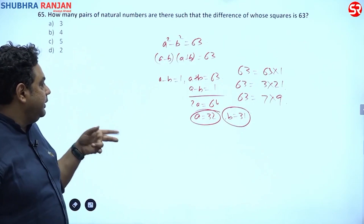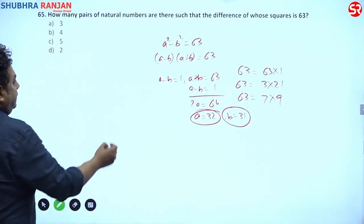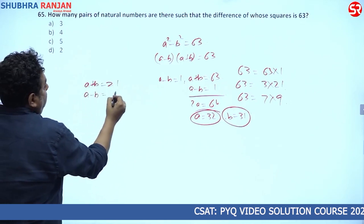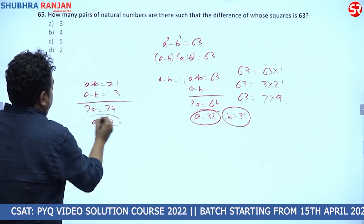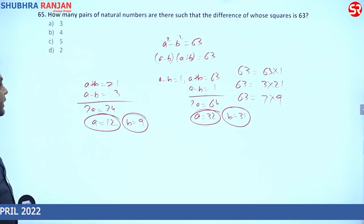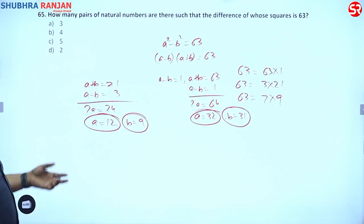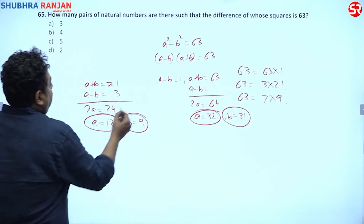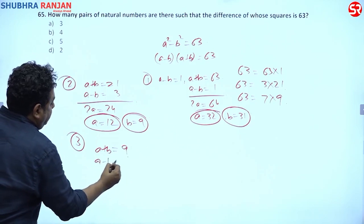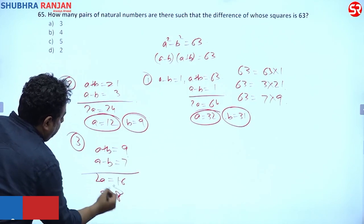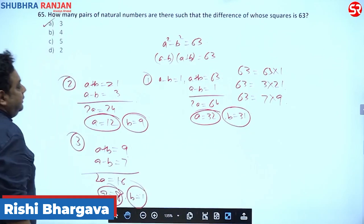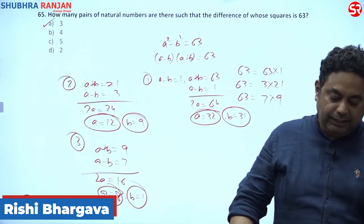Pair one: (32, 31) — 32 − 31 = 1, 32 + 31 = 63. ✓ For A + B = 21, A − B = 3: 2A = 24, A = 12, B = 9. Check: 12 + 9 = 21, 12 − 9 = 3, and 12² − 9² = 144 − 81 = 63. ✓ That's pair two. For A + B = 9, A − B = 7: 2A = 16, A = 8, B = 1. So there are three such pairs in total.